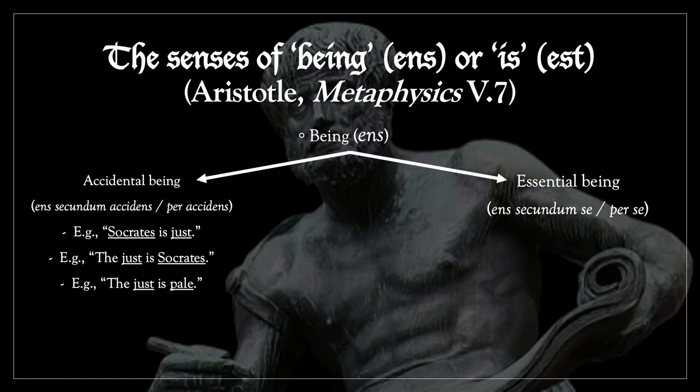Each of these three sentences uses the word 'is' to express accidental being. That's because the compound of subject and predicate in each of these cases is a composition of an accident and a substance, or of two accidents within a substance. Thus, in each case, we have an accidental composite of multiple beings.